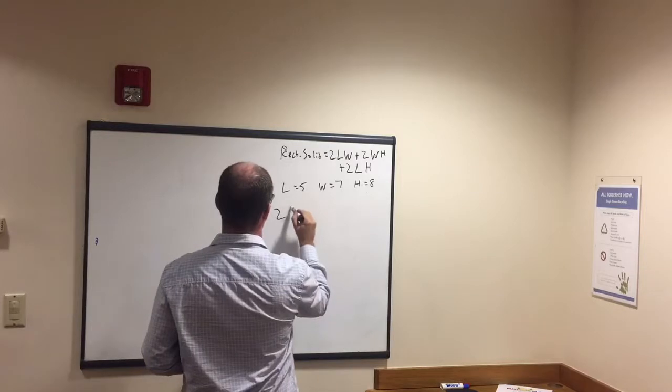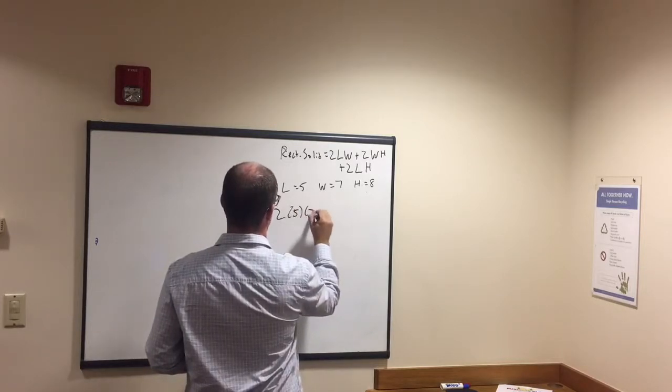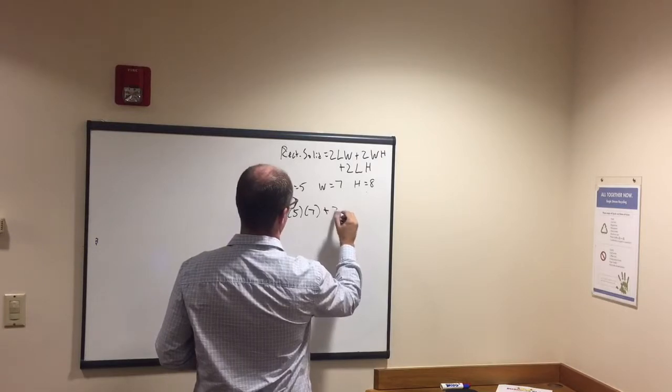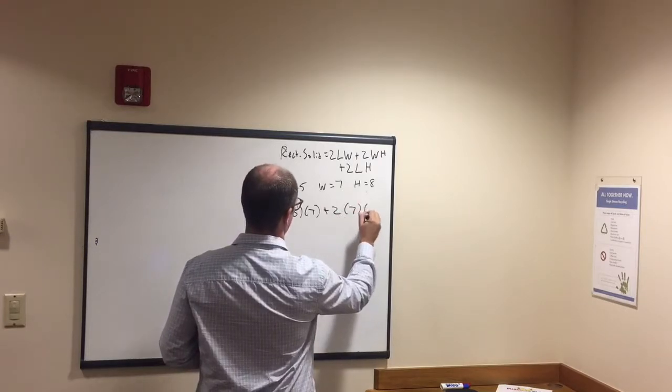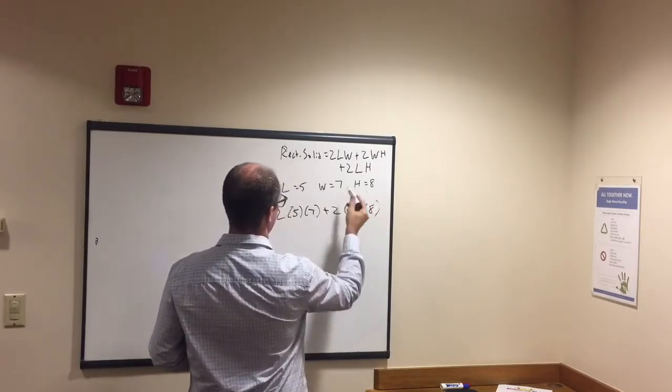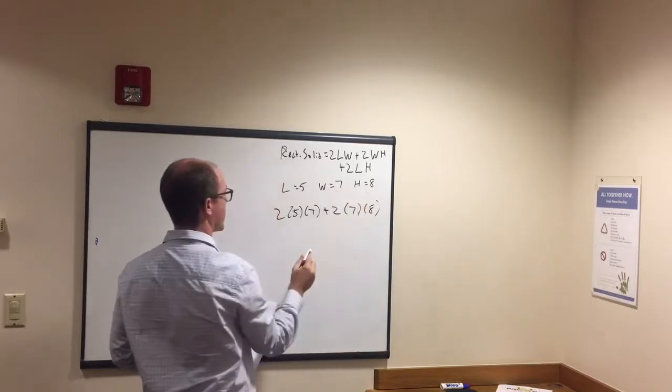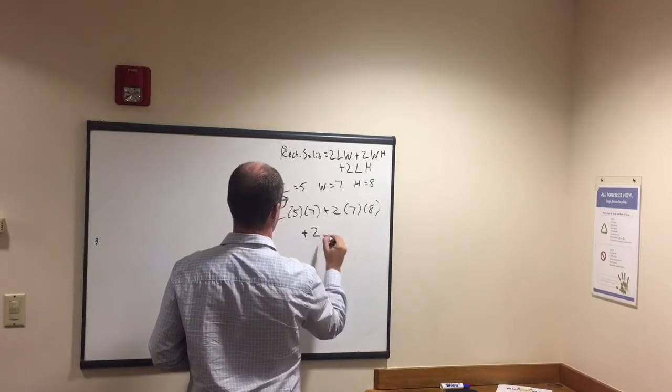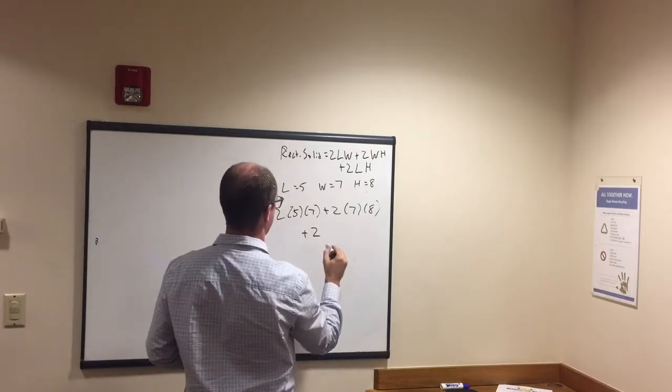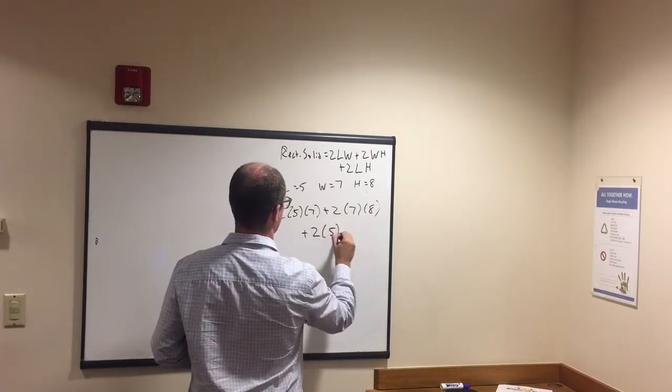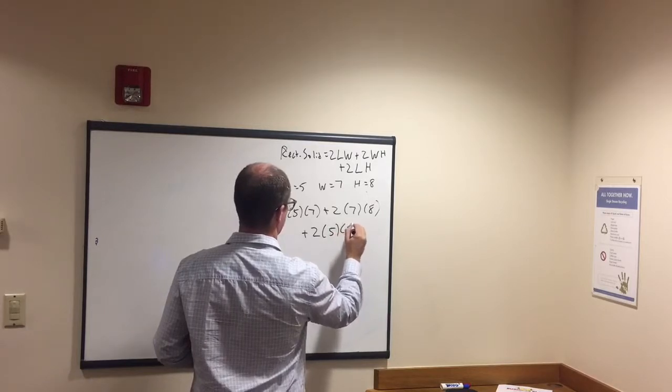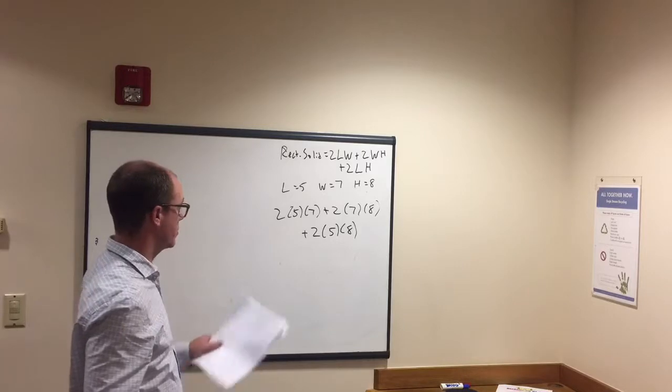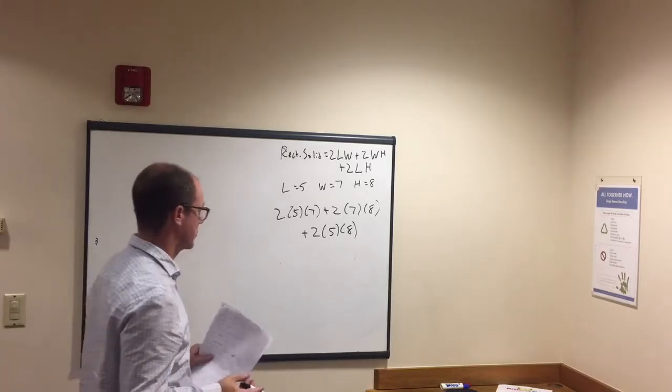Okay, so let's plug these in. 2 times 5 times 7 plus 2 times 7 times 8, right, 2 with height, there's the width, there's the height, and we'll do the last one, 2 times length times height, 2 times 5 times 8. Okay, that's how we plug that stuff in, pretty simple, and then we just got to multiply these out.